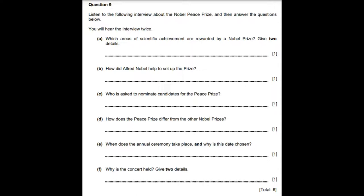The Norwegian Parliament appoints the Nobel Committee, which selects the person or organisation to be awarded the Peace Prize. Each year, the committee invites suitably qualified people to submit nominations by February 1st. Uniquely, unlike other Nobel Prizes which only recognise completed scientific or literary work, the Nobel Peace Prize may be awarded to persons or organisations that are in the process of resolving conflict or creating peace — their work doesn't have to be complete.